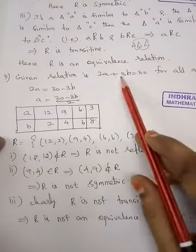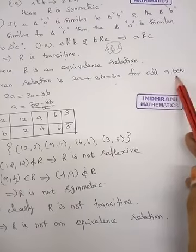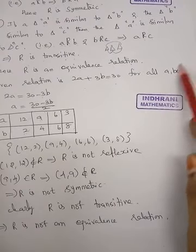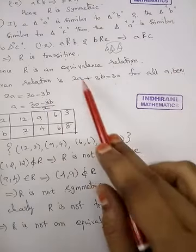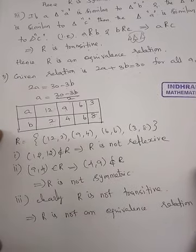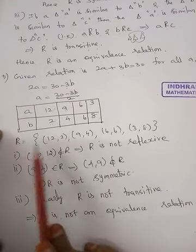So, 2A plus 3B equal to 30 for all A, B belongs to N. N is natural numbers starting from 1, 2, 3 etc. A and B are two natural numbers. Moreover, this condition will satisfy. Now, this is the value of R.